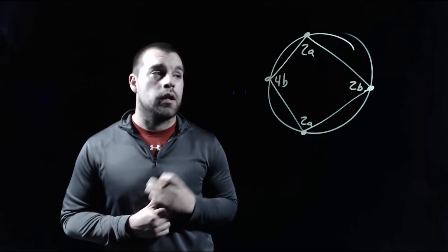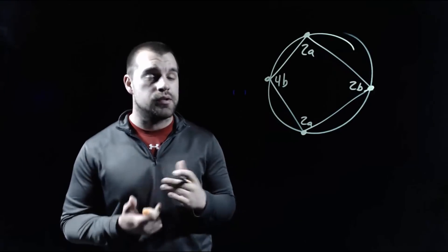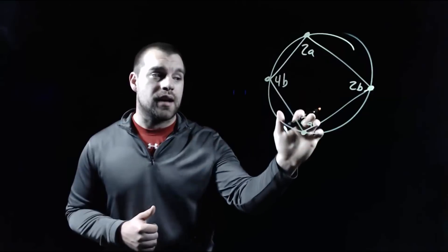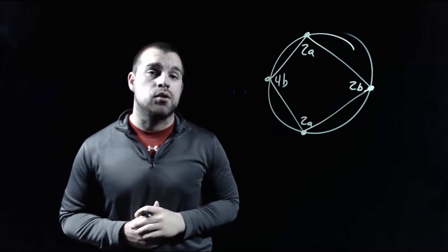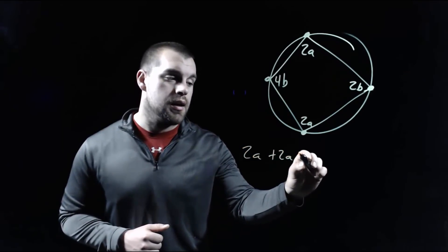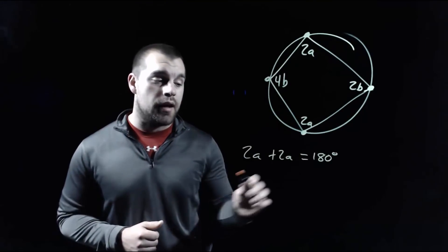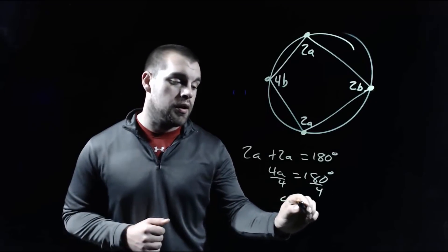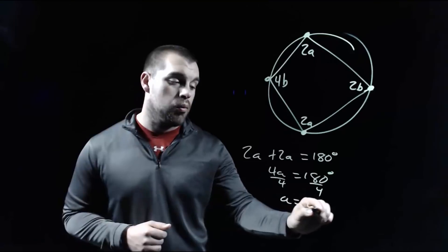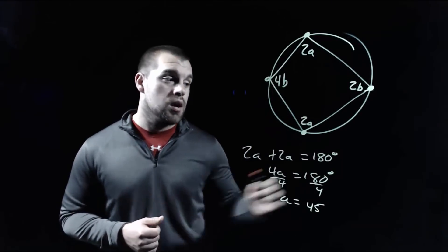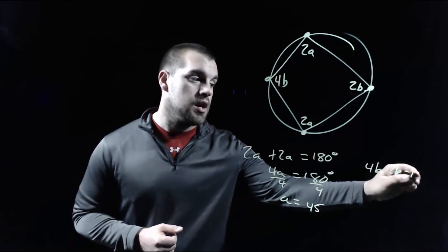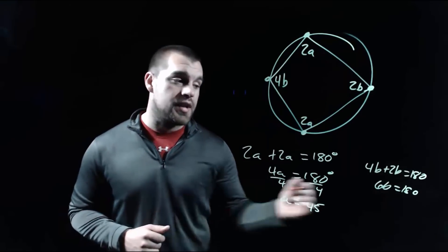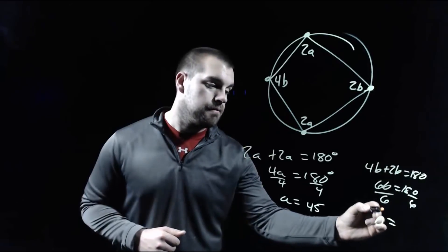Again, in this picture we've got a quadrilateral inscribed within a circle. We're going to figure out our A and B values using the fact that opposite angles have to be supplementary. Starting with the angles that have A's: we've got 2A on top and 2A on bottom. Because these are opposite angles, 2A plus 2A has to equal 180 degrees. Combining like terms gives 4A equals 180, and dividing by 4 gives A equals 45. For B, we take 4B plus 2B equals 180, which gives 6B equals 180, and dividing by 6 gives B equals 30.